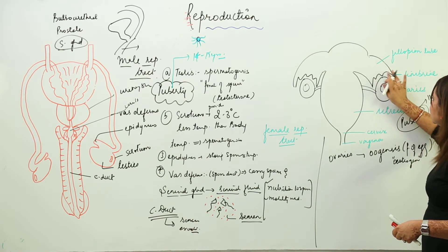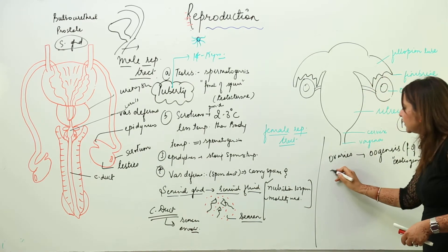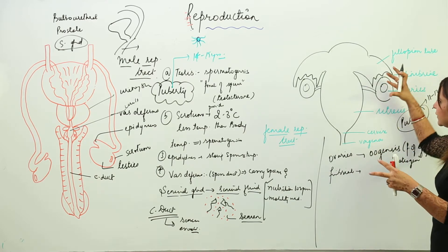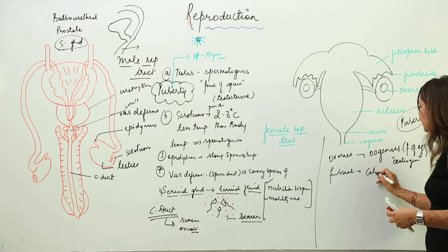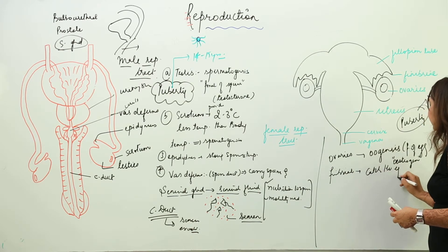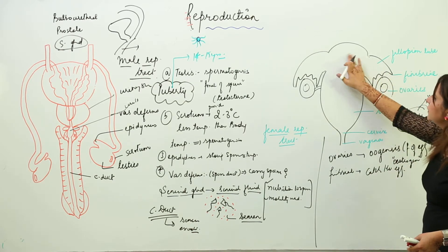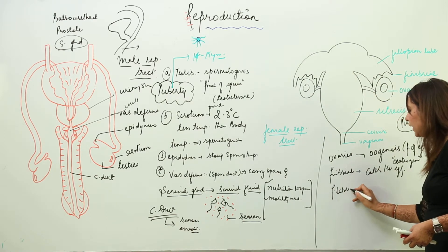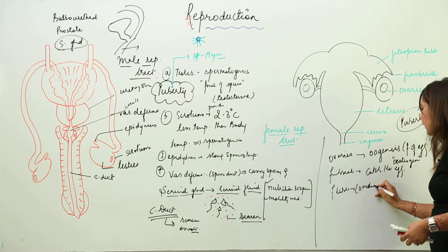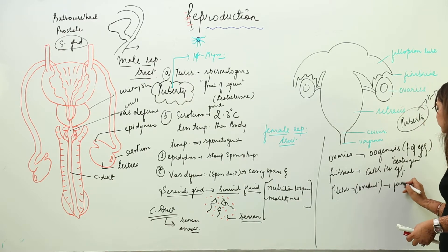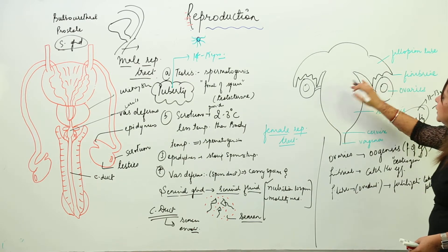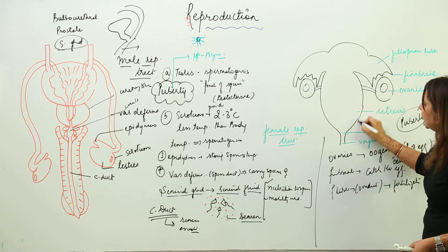After the egg is formed, there is a structure called fimbriae — finger-like structures which catch or receive the egg. This leads into the fallopian tube, also called the oviduct, which is a very important region where fertilization takes place.